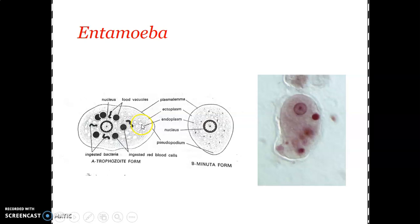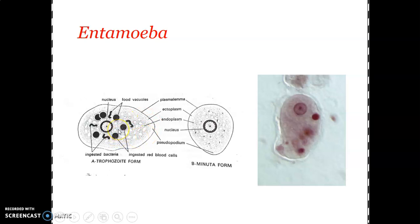The pseudopodia are short, broad, rounded, or long and finger-like, mainly composed of ectoplasm. During locomotion, the rapidly advancing end of the body consists of a single pseudopodium — this condition is known as monopodium. This is with regard to the magna form.